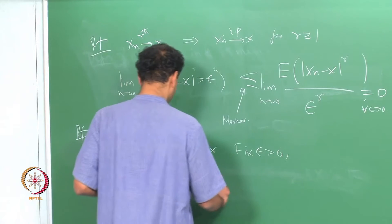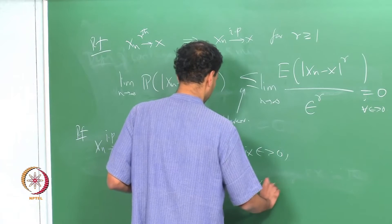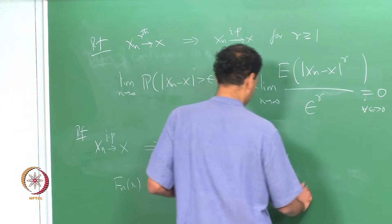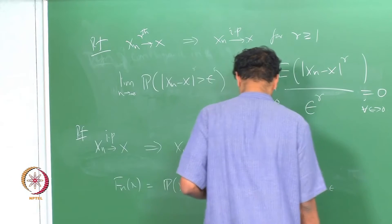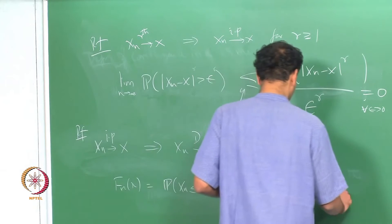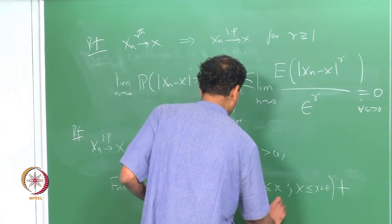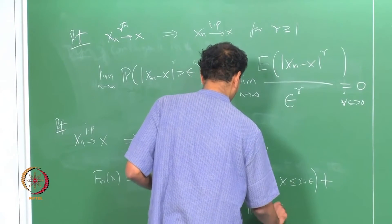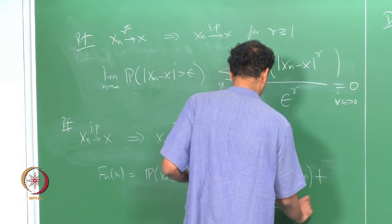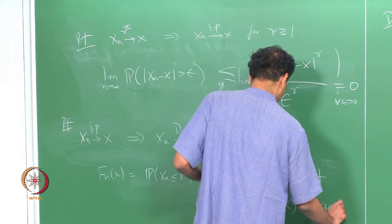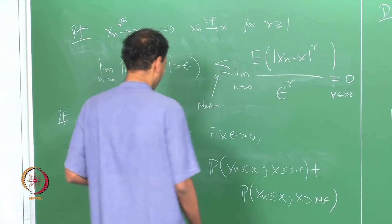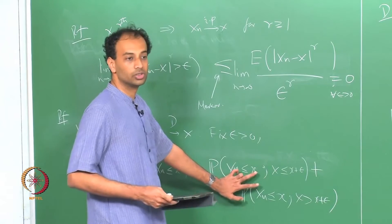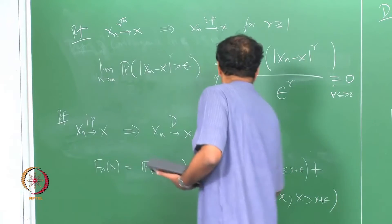This equals the probability that X_n ≤ X and X ≤ X plus epsilon, plus the probability that X_n ≤ X and X > X plus epsilon. We are just splitting this up into these two parts.